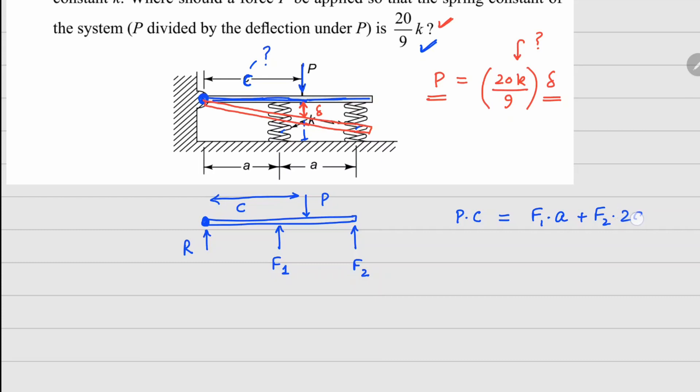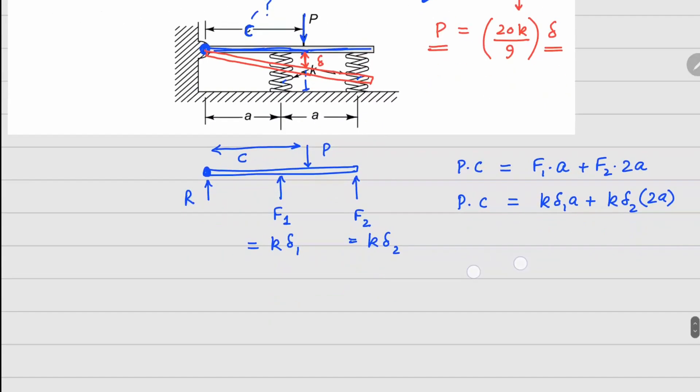f2 times 2a. Now the spring forces are going to be related with the deformation at these places. If the deformation here is delta_1, this is k delta_1. Similarly, this is k delta_2. So P times c equals k delta_1 a plus k delta_2 times 2a.